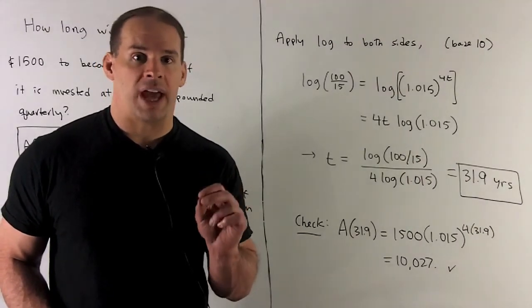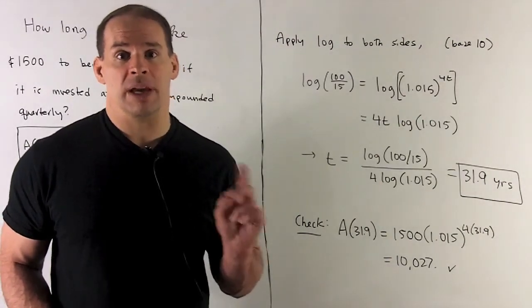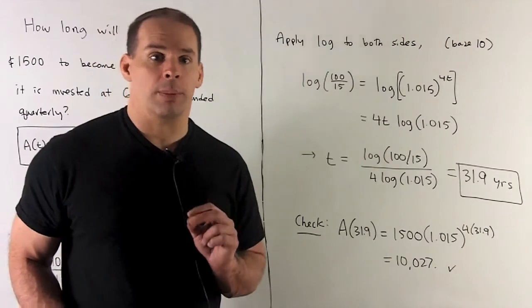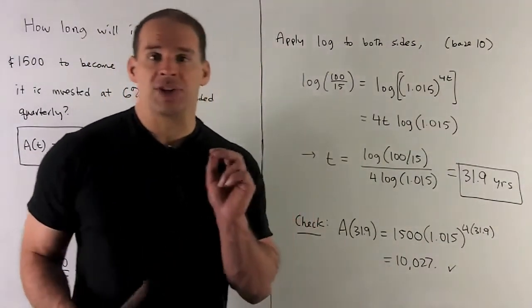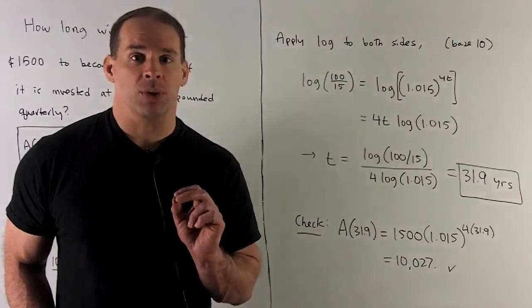Now we can check that. I just take 31.9, put it in my original equation, make sure 10,000 comes out. So we put 31.9 in, and then what comes out? 10,027. That's close enough. That's probably going to be due to rounding.